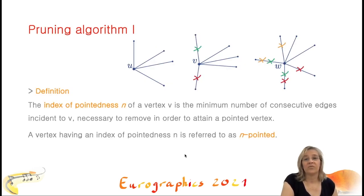Our pruning algorithm is based on the definition of index of pointedness N of a vertex V, which is the minimum number of consecutive edges that have to be removed to make V a pointed vertex. In the images here, for example, U is a pointed vertex. It is zero pointed, V is one pointed and W is two pointed. Indeed, removing any single edge in W does not make it pointed. Additionally, we define the angle of pointedness as the single angle larger than 180 degrees around a pointed vertex.